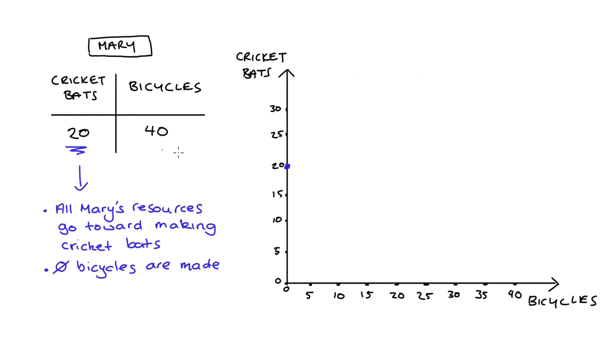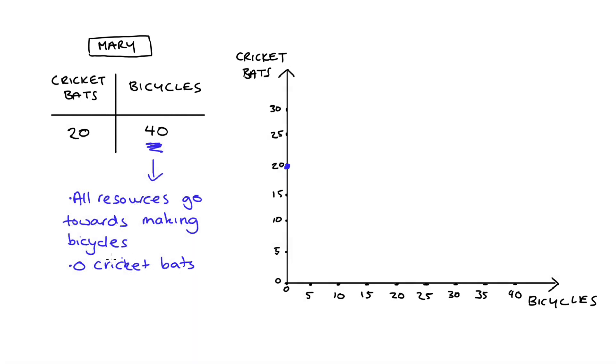In a similar way, I can tell that the horizontal axis intercept is 40, since if Mary fully specializes in bicycles, she can make 40, and at this point, because she's putting all of her resources towards making bicycles, she will make zero cricket bats.